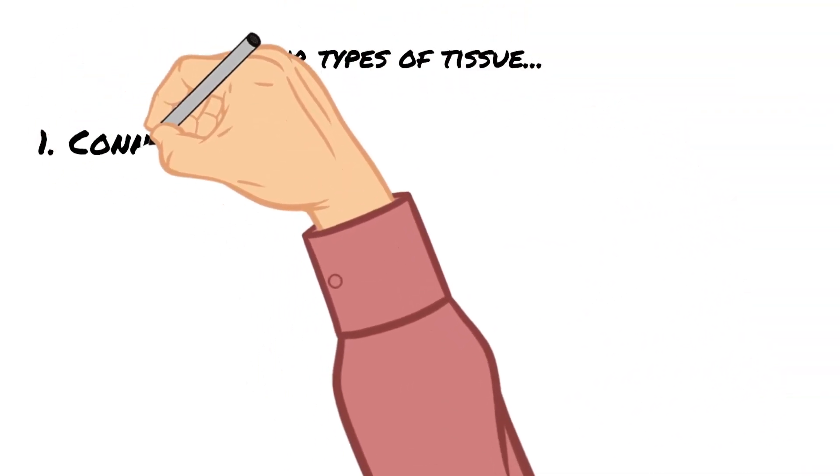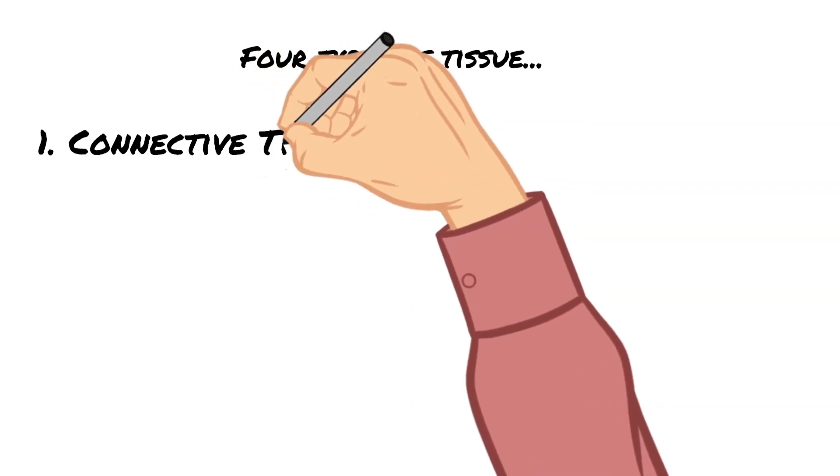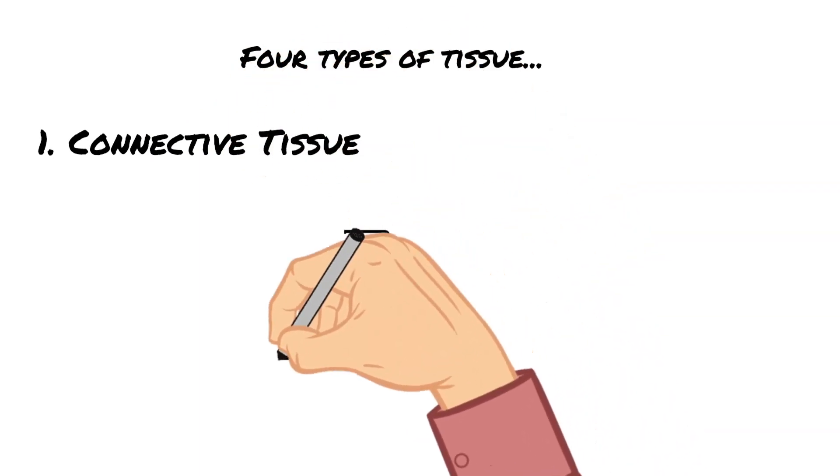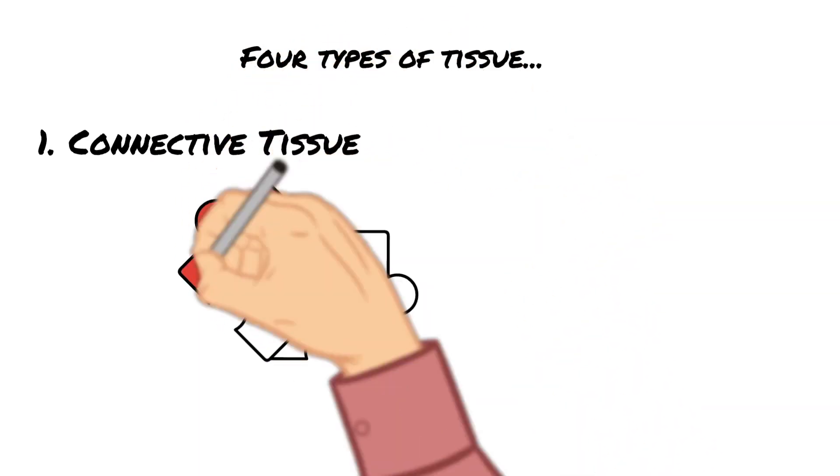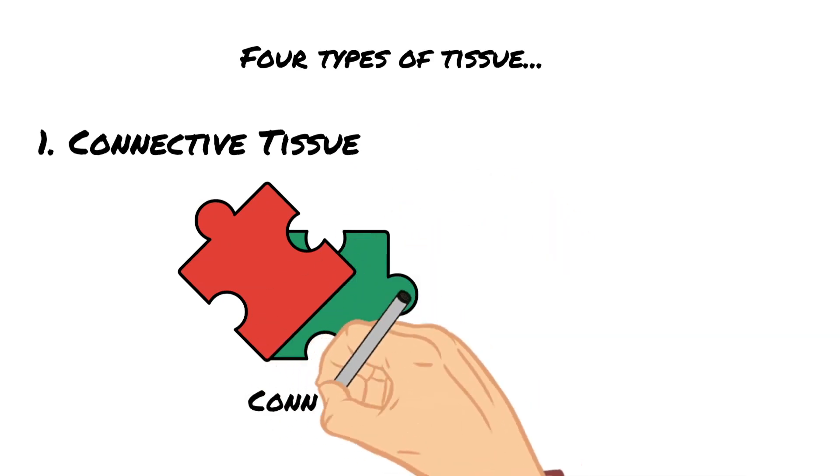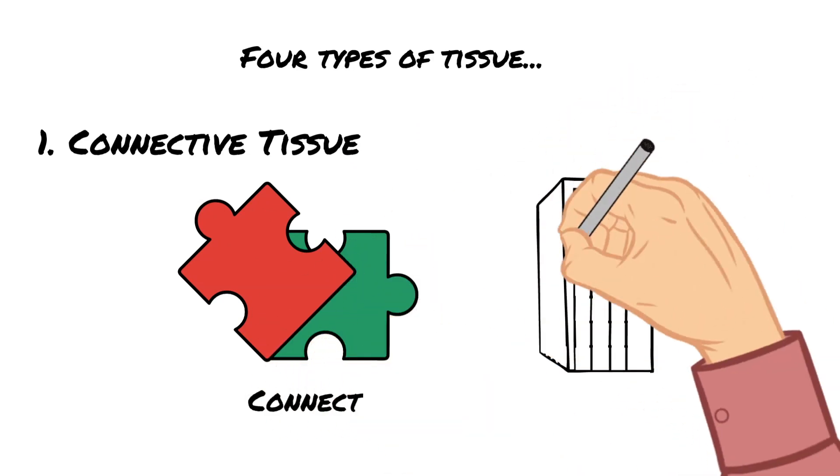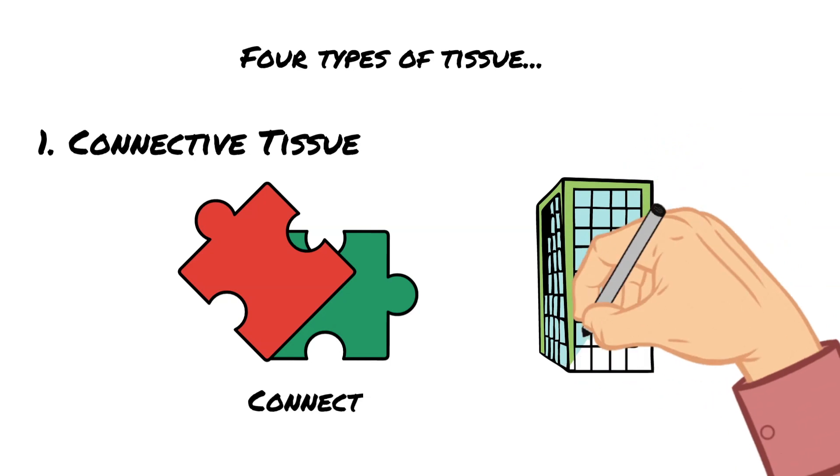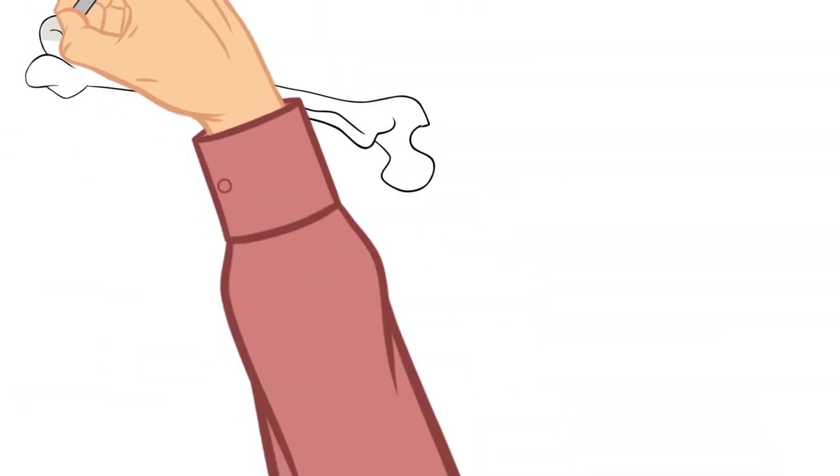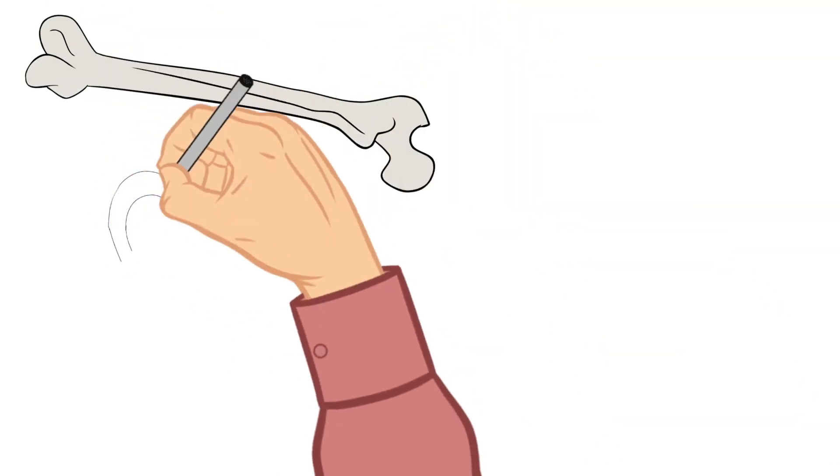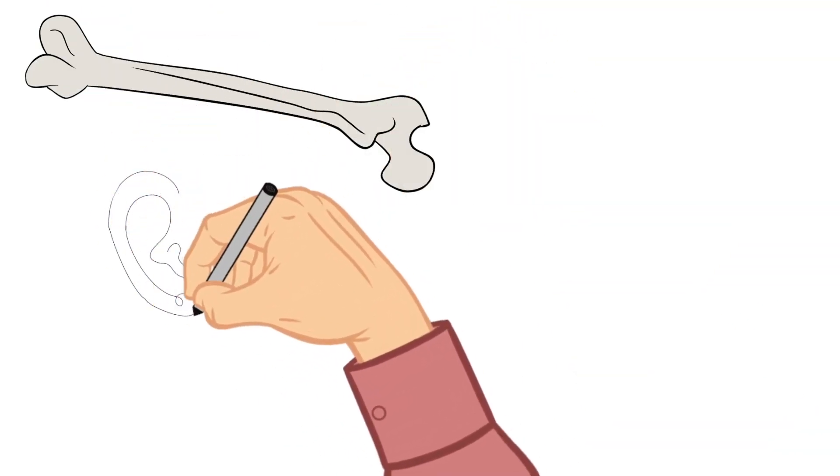The first type is called connective tissue. Connective tissue is aptly named because its main function is to connect and provide structure in the body. It is typically found in our bones, cartilage, adipose (which is fat), and even blood and many other areas in our body.